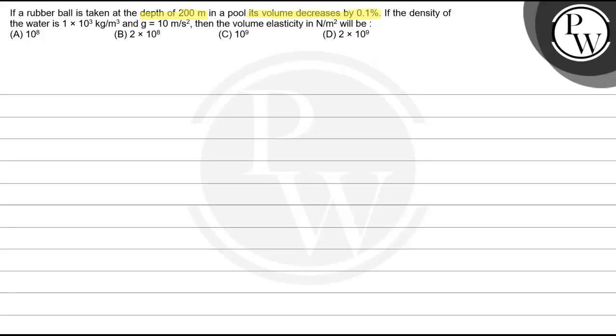If the density of water is 1 × 10³ kg/m³ and g is 10 m/s², then the volume elasticity in N/m² will be.